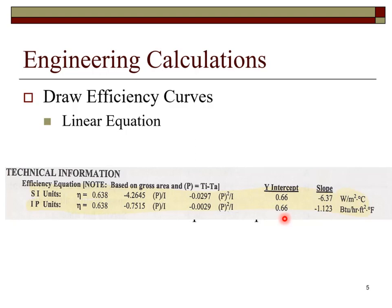The slope of the efficiency line is minus 1.123 BTUs per hour foot squared degree Fahrenheit.